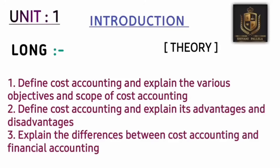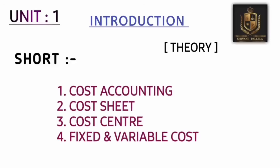Unit one is basically a theory unit, and most of the passing marks can be gained from this unit alone. I have given only three questions for the long answer. If you are perfect with these three questions, you will definitely attempt one long question and one short question — 12 marks for long plus 4 marks for short equals 16 marks. Half of your passing marks come from unit one. The three most important questions are: define cost accounting, explain the scope or objectives of cost accounting, and the advantages and disadvantages and differences between cost accounting and financial accounting.